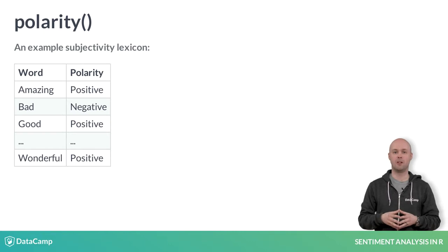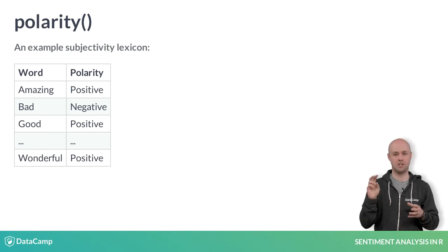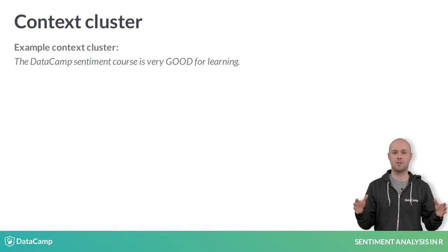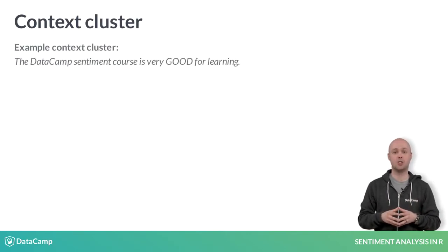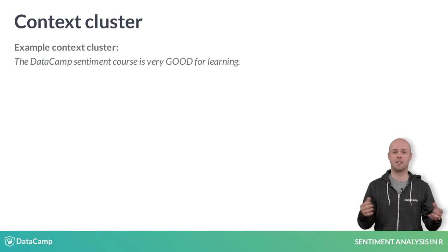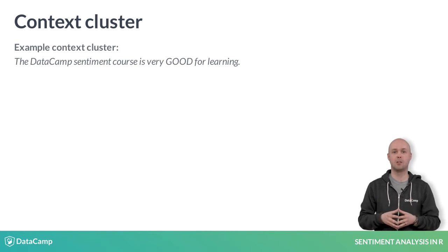When you apply the polarity function to text, the function identifies words from the subjectivity lexicon. Once the polarized words are tagged, the function creates a context cluster around the term. In this example, the lexicon contains 'good', and it is found in the text. By default, a context cluster includes the four words before and two words after the identified word. So removing stop words will impact the polarity scores because it affects the words in the cluster.